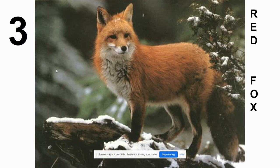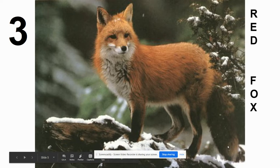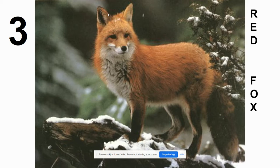Number three is the red fox, the fox you're probably most familiar with in our region. Named for its red coat, other clues for the red fox include the white chin, chest, and belly, a white tail tip — you'll see it in a future picture — and black legs. Sometimes there's even some black in the ears, especially on the back of the ears. That's the red fox.